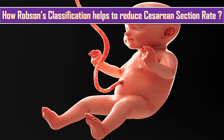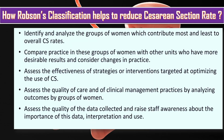How does Robson classification help to reduce cesarean section rate? First, it helps to identify and analyze the groups of women which contribute most to the overall cesarean section rate. Secondly, it compares the practice in these groups of women with other units who have more desirable results and considers changes in practice.